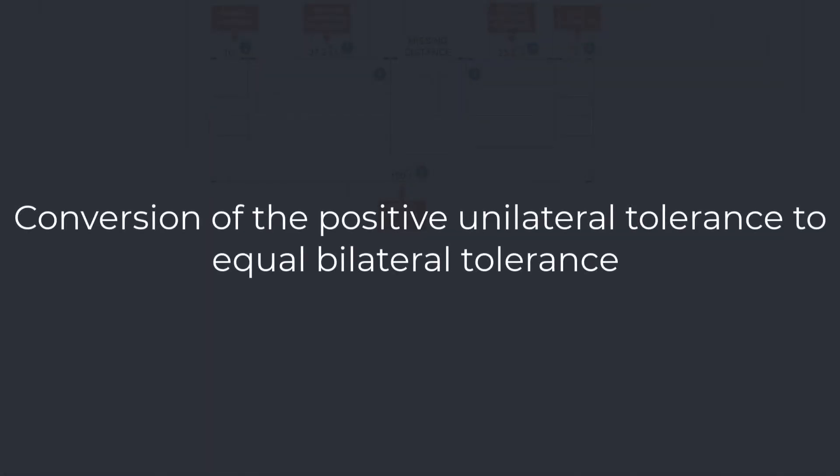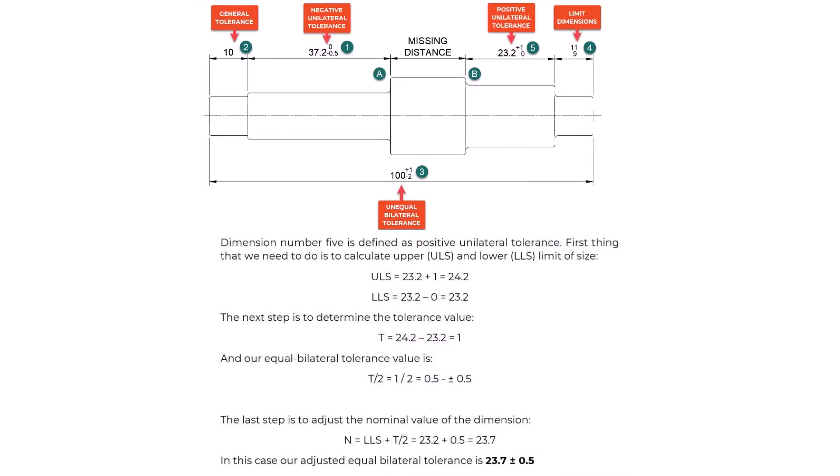Conversion of Positive Unilateral Tolerance to Equal Bilateral Tolerance. Dimension number five is defined as a positive unilateral tolerance. ULS = 23.2 + 1 = 24.2. LLS = 23.2 − 0 = 23.2. Tolerance value T = 24.2 − 23.2 = 1, so the equal bilateral tolerance is T/2 = 1/2 = ±0.5. The adjusted nominal value N = LLS + T/2 = 23.2 + 0.5 = 23.7. Our adjusted equal bilateral tolerance is 23.7 ± 0.5 millimeters.